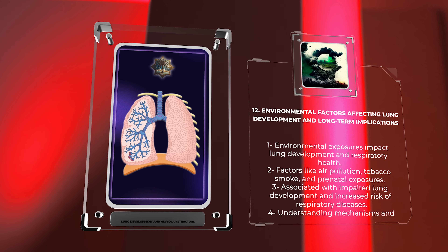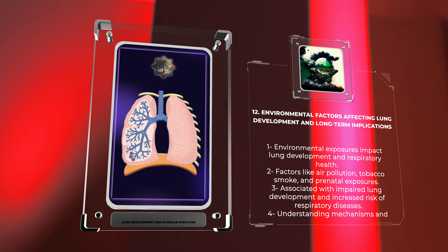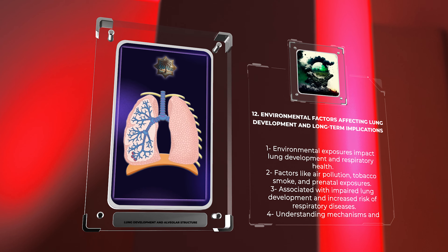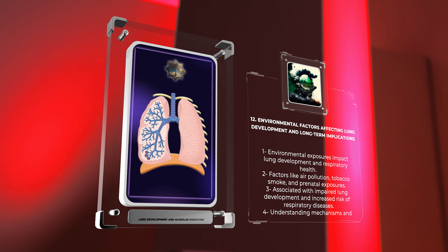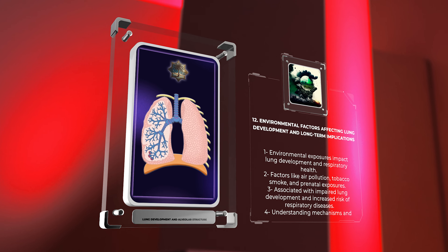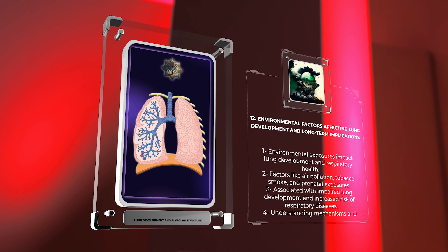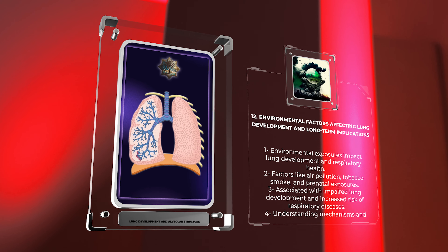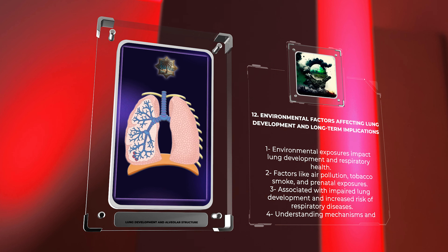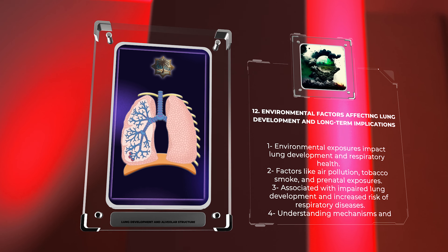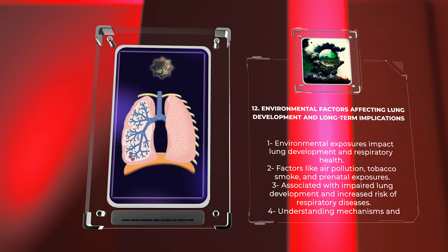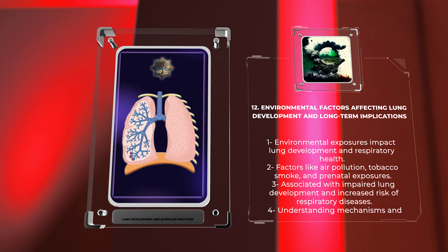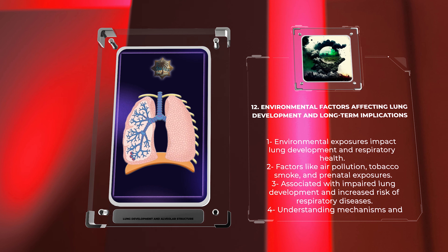Air pollution, including particulate matter and atmospheric pollutants, has been associated with impaired lung development and increased risk of respiratory diseases. Similarly, prenatal exposures to toxins, such as maternal smoking or certain medications, have been linked to structural and functional abnormalities in the developing lungs.